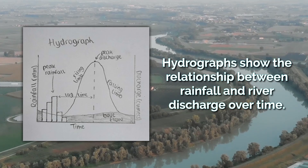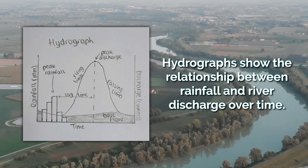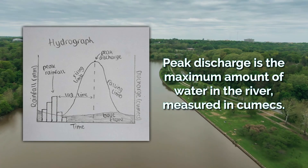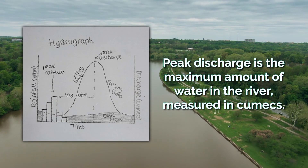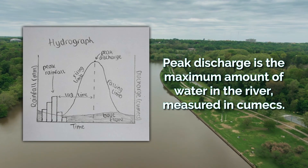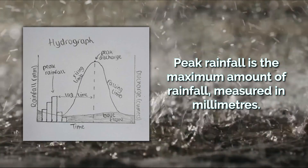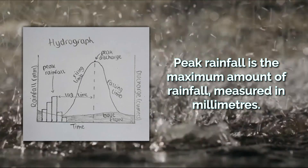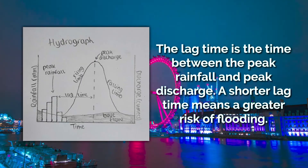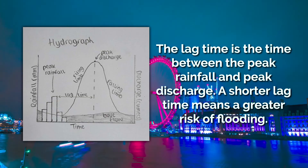Hydrographs show the relationship between rainfall and river discharge over time. Peak discharge is the maximum amount of water in the river, measured in cumecs. Peak rainfall is the maximum amount of rainfall, measured in millimetres. The lag time is the time between the peak rainfall and peak discharge.